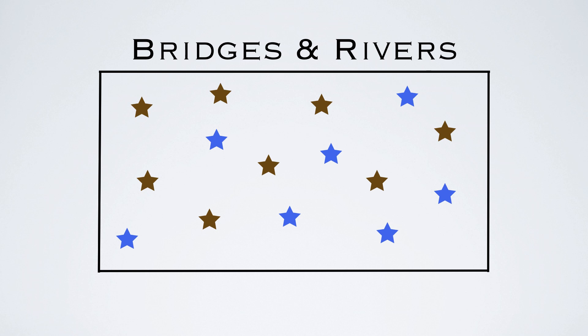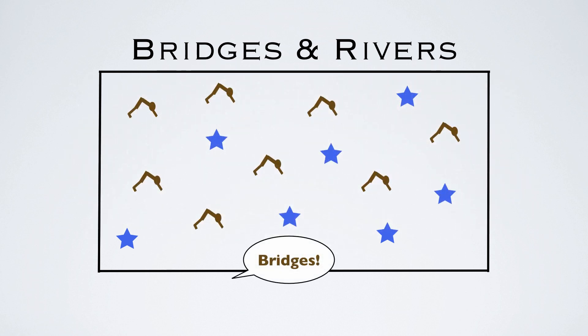On the signal — or better yet, you can use music — when the music starts, the students start running around in whatever direction they want. And when the teacher yells out 'bridges,' for example, then all the bridges will have to turn into a bridge.